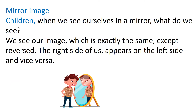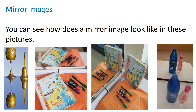Mirror image. Children, when we see ourselves in a mirror, we see our image which is exactly the same except reversed — the right side appears on the left side and vice versa. Here are a few pictures and their mirror images. The math magic book is there and you can read the word 'Math Magic,' but if you see the reflection, you cannot read it — it is reversed. The pens kept along with the book have lids facing you in the picture, but in the mirror image it is facing the other side. So mirror images are exactly the same except they are reversed.